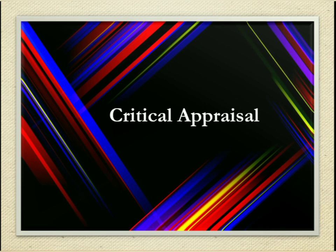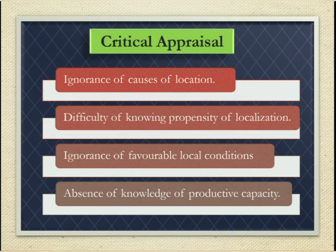The important points of criticism are as follows. First, ignorance of causes of location: the theory tells only whether the industry is centralized or decentralized, but does not give the causes of such a tendency. Second, difficulty of knowing propensity of localization: it is difficult to know, only on the basis of the coefficient of localization, whether there is a propensity of centralization or decentralization.